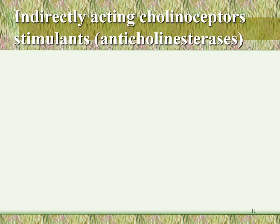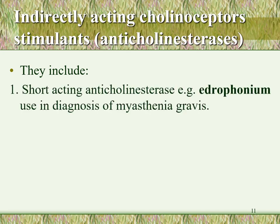Now we will talk about the indirectly acting cholinoreceptor stimulants, called anticholinesterases, because they inhibit the enzyme cholinesterase, thereby increasing endogenous acetylcholine levels. This group includes three categories: first, short-acting anticholinesterases such as edrophonium, with a duration of action of about three minutes. Edrophonium can be used for diagnosis of myasthenia gravis, which we will discuss at the end of this lecture.